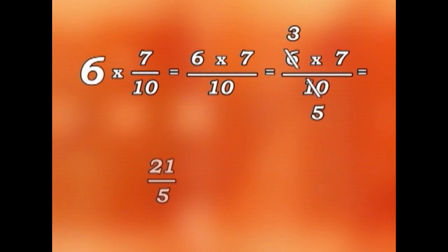That's the same as 21 over 5 or 4 and 1 fifth. And 4 and 1 fifth is a mixed number.